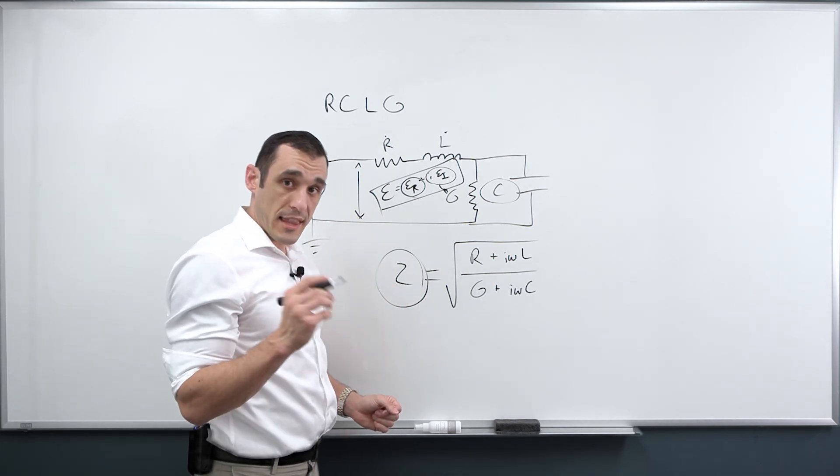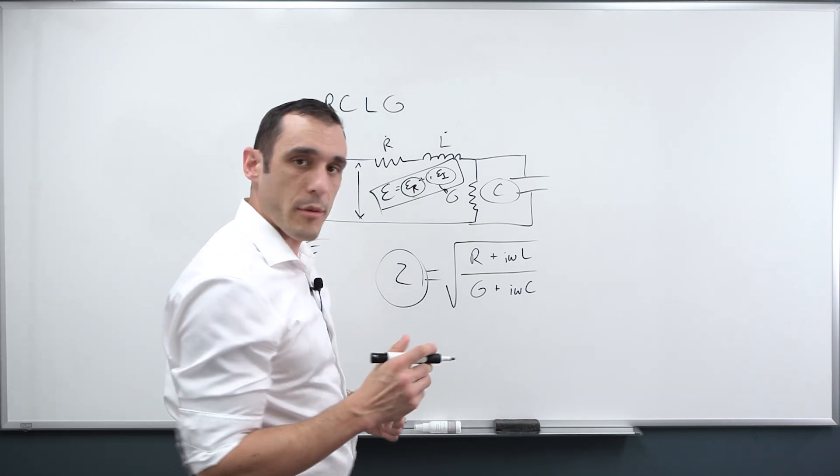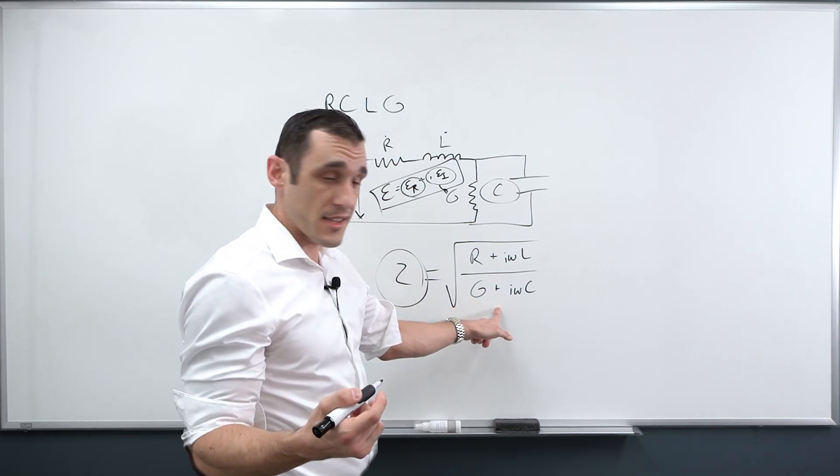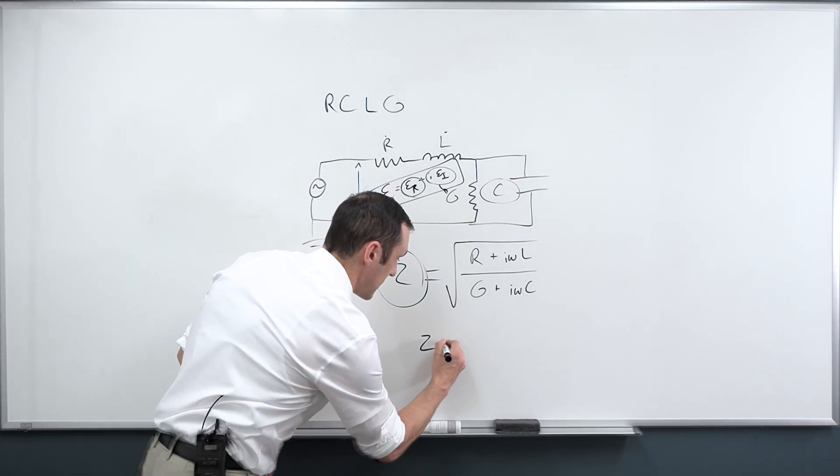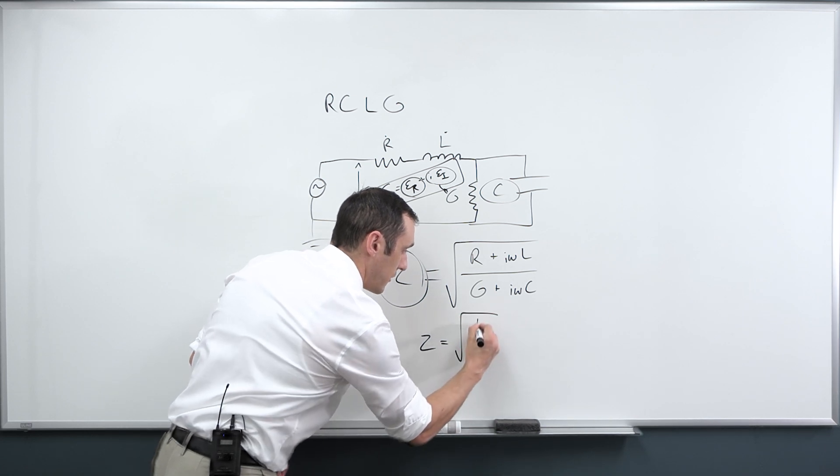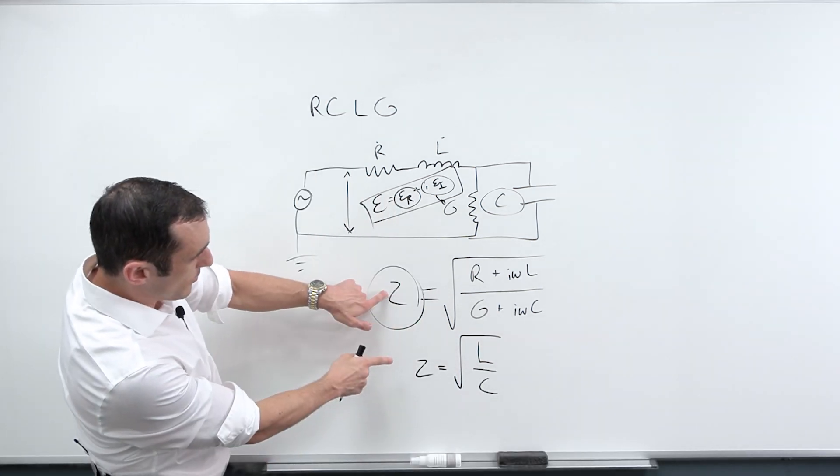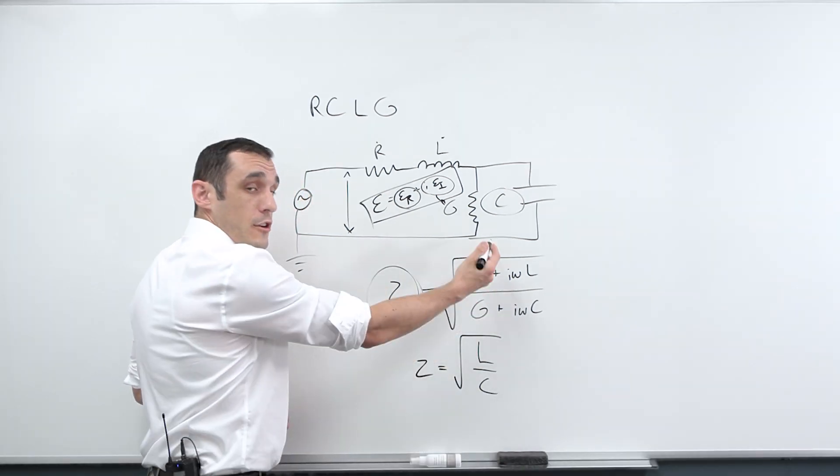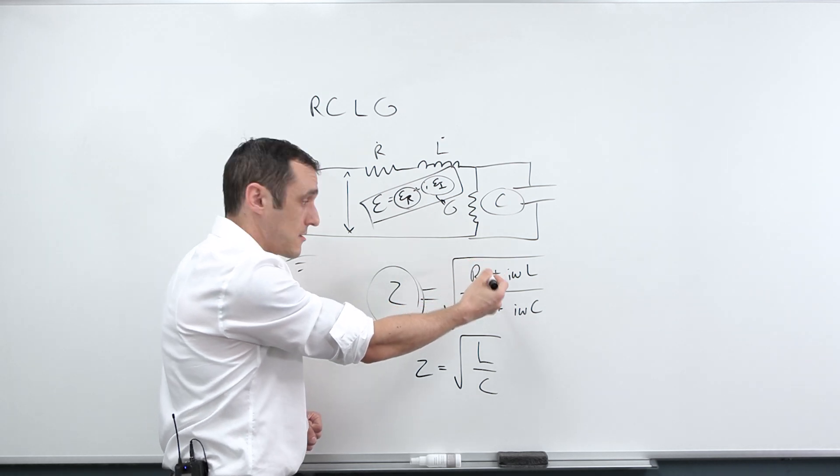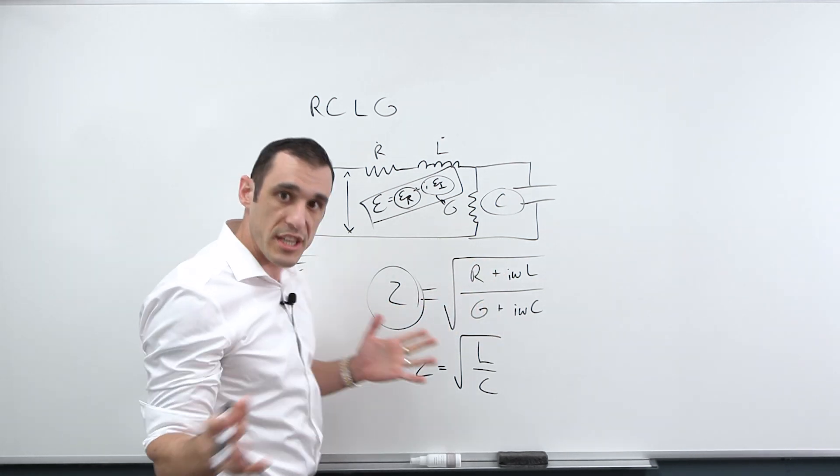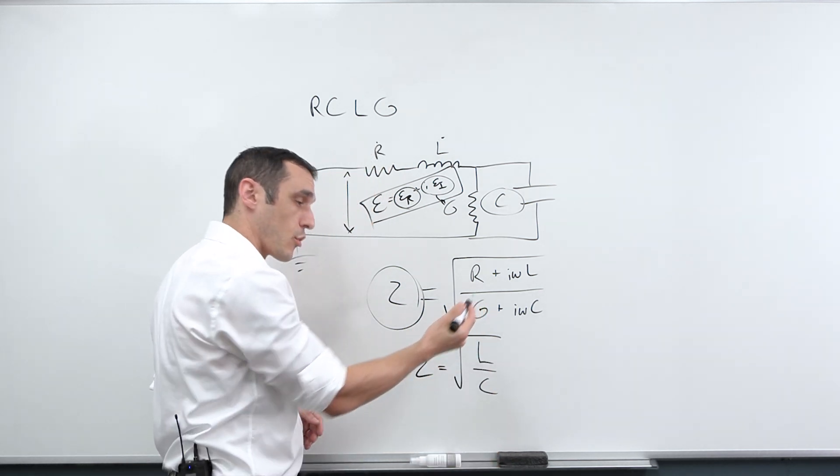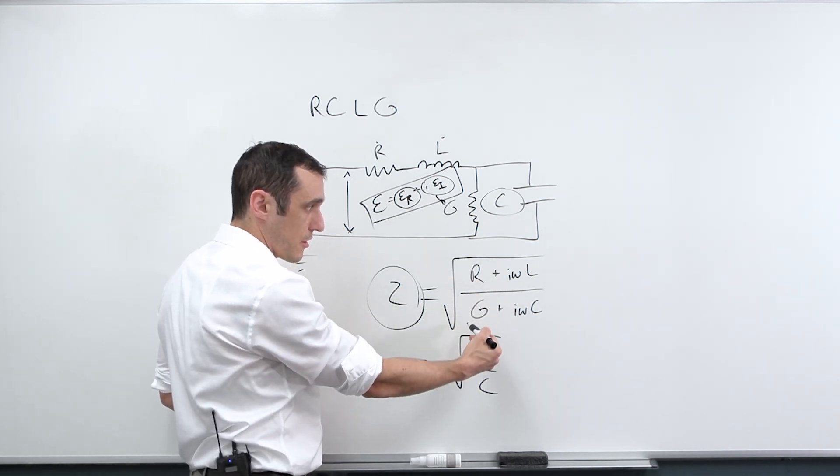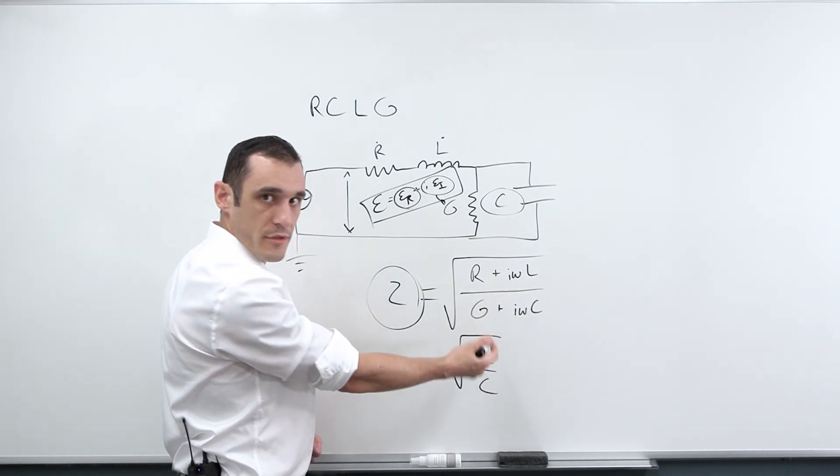But remember, if you look at a formula like the IPC 2141 formula or Waddle's formula, what they're actually showing you is an approximation to this. So the approximation that you're going to see is Z equals square root of L over C. So how do we get from here to here? When is this converging to this? If R is zero, meaning we have very small resistance, and if we just ignore G, we can't really ignore G in reality, but if we just ignore G, then we would get down to here because these two terms would be zero, these would cancel out, and you'd be left with square root of L over C.